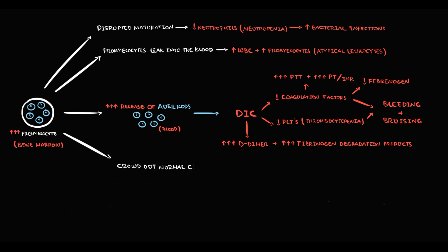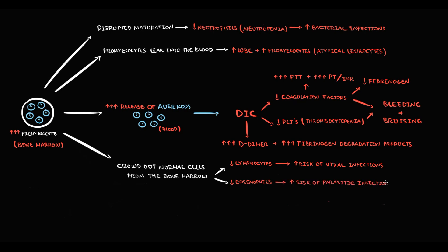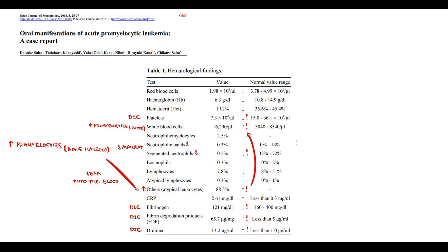Over time, promyelocytes crowd out normal cells from the bone marrow. As a result, lymphocytes decrease (increasing viral infection risk), eosinophils decrease (increasing parasitic infection risk), red blood cells and hemoglobin decrease causing typical anemic symptoms, and platelets decrease — aggravating thrombocytopenia after DIC. In blood analysis we can see these changes: low eosinophil and lymphocyte percentages, and low red blood cells, hemoglobin, and hematocrit.